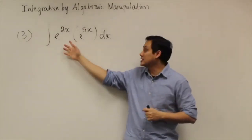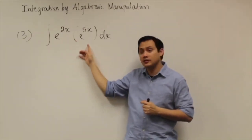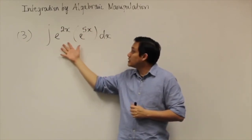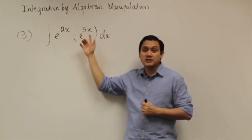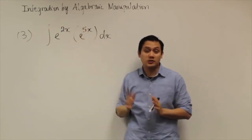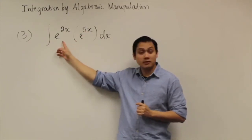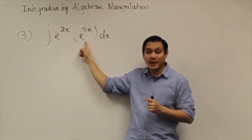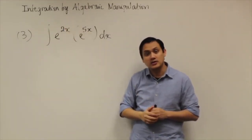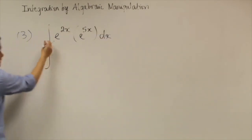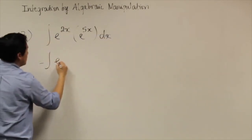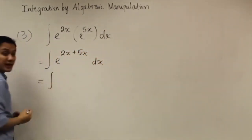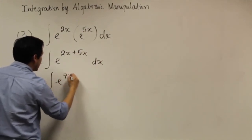Here's the third problem: the integral of e to the 2x multiplied by e to the 5x dx. The product e to the 2x times e to the 5x is something you've seen before in college algebra. Using algebraic manipulation — when you have the same base, you can add the exponents together. So this integral becomes the integral of e to the (2x plus 5x) dx, which becomes e to the 7x dx.